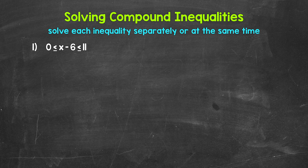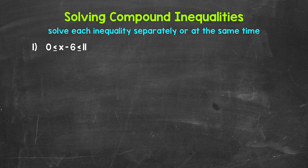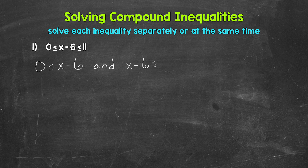Let's jump into number one, where we have x minus 6 is greater than or equal to 0 and less than or equal to 11. In other words, x minus 6 has to be greater than or equal to 0 and x minus 6 has to be less than or equal to 11. When it comes to solving compound inequalities involving AND, we have two ways we can do it: solve each inequality separately or at the same time.